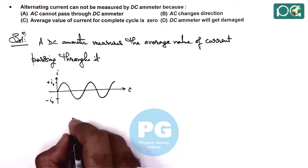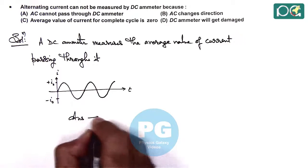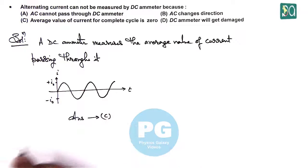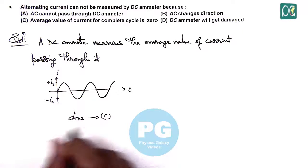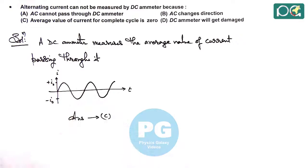So here we can say answer to this question, most appropriate answer is C because the average value of current is zero.